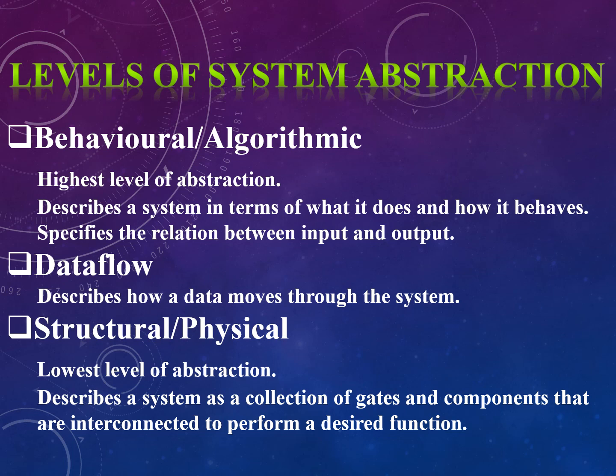The structural or physical level of abstraction is the lowest level. It describes a system as a collection of gates and components that are interconnected to perform a particular desired function. So these are the various levels of system abstraction, each with its own features and way of describing a particular system.